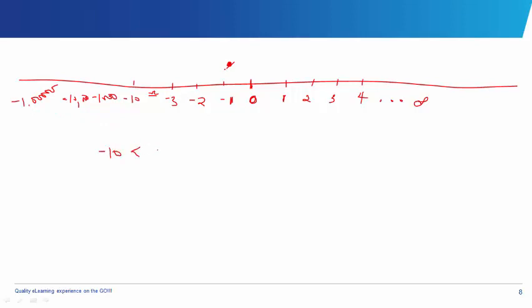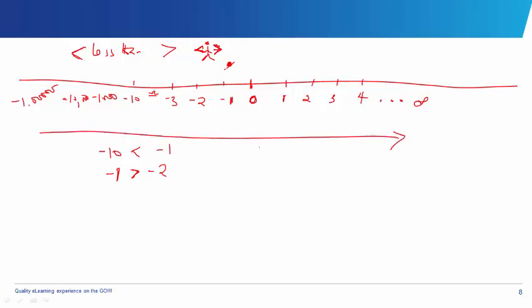That means minus 10 is actually less than minus 1. This is our sign for less than. Less than goes to your left hand, and greater than goes to your right hand. So less than is this way and greater than is this way. Minus 10 is less than minus 1, and minus 1 is greater than minus 2. Numbers increase going right but decrease going left down the number line.